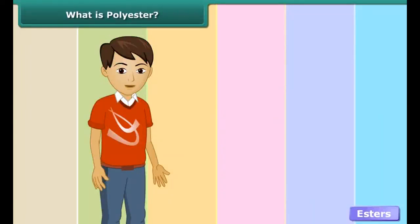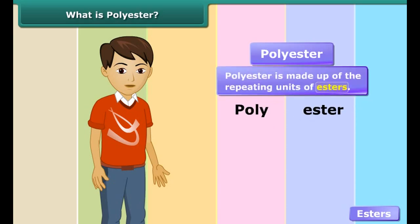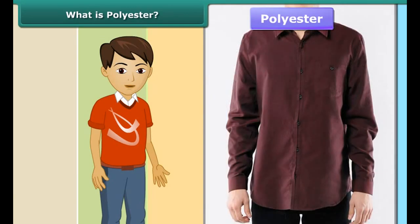Polyester comes from the words 'poly' and 'ester', so it is made up of repeating units of esters. Fabrics made of polyester fiber do not get wrinkled easily, remain crisp, and are easy to wash.